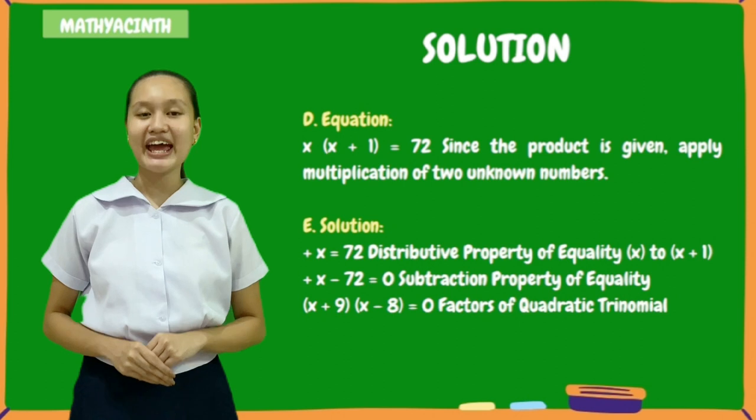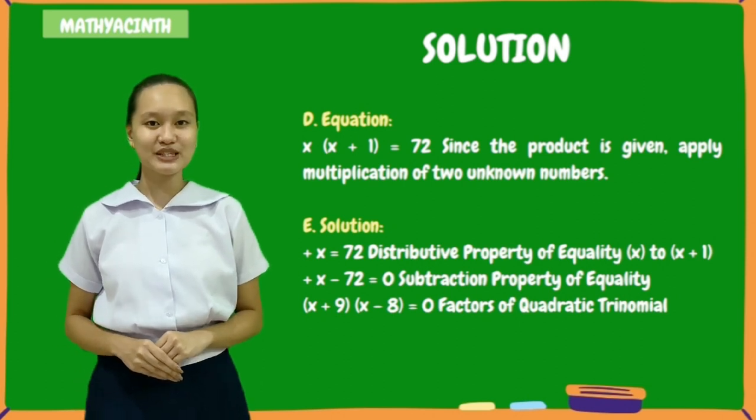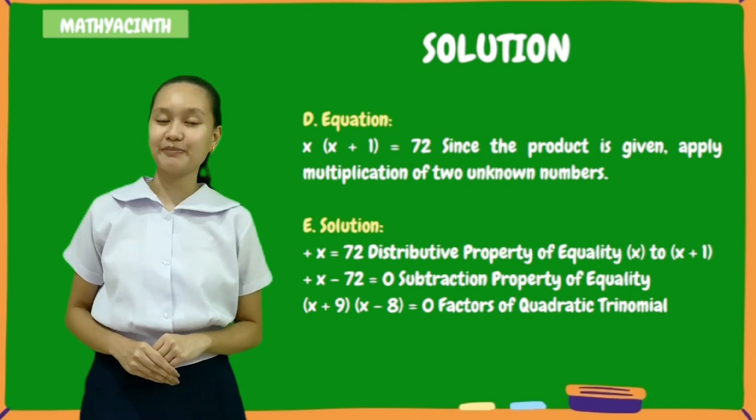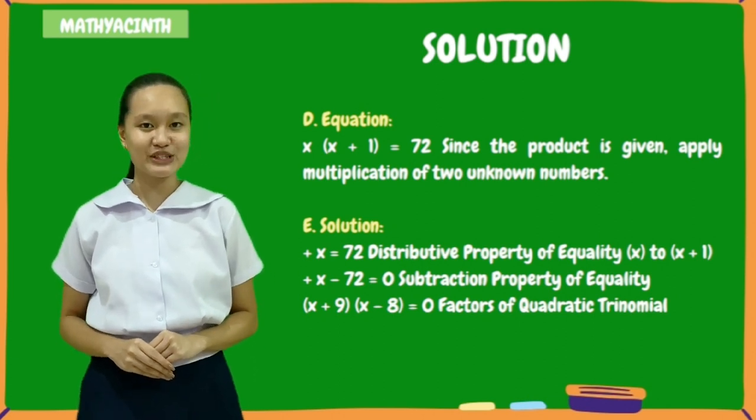Letter D. Equation. X times the quantity x plus 1 equals 72. Since the product is given, apply multiplication of two unknown numbers.